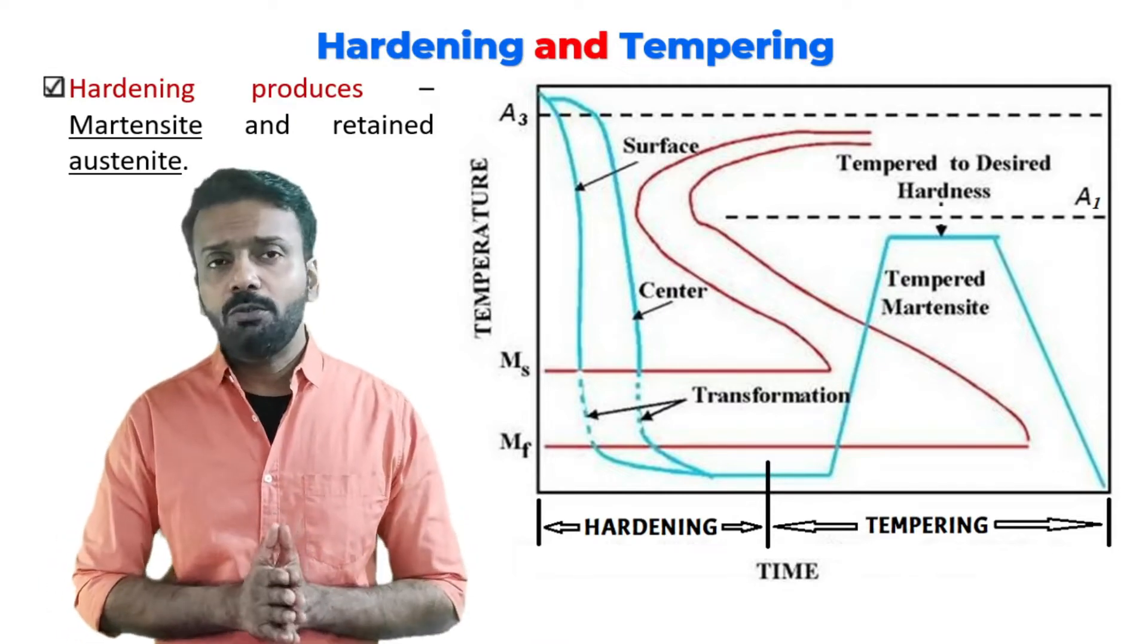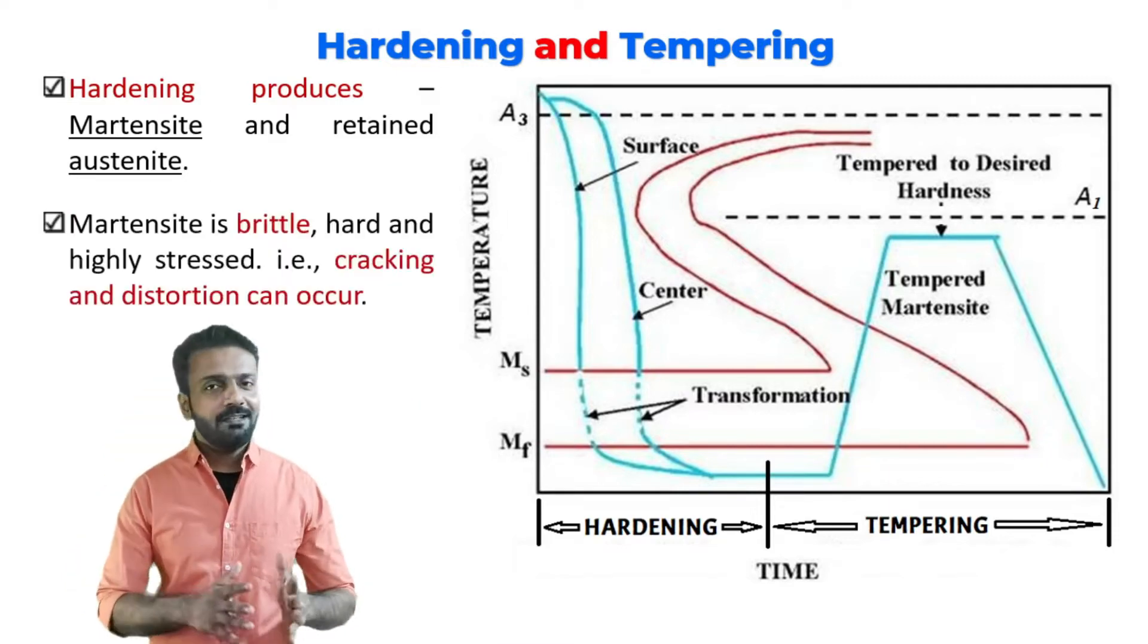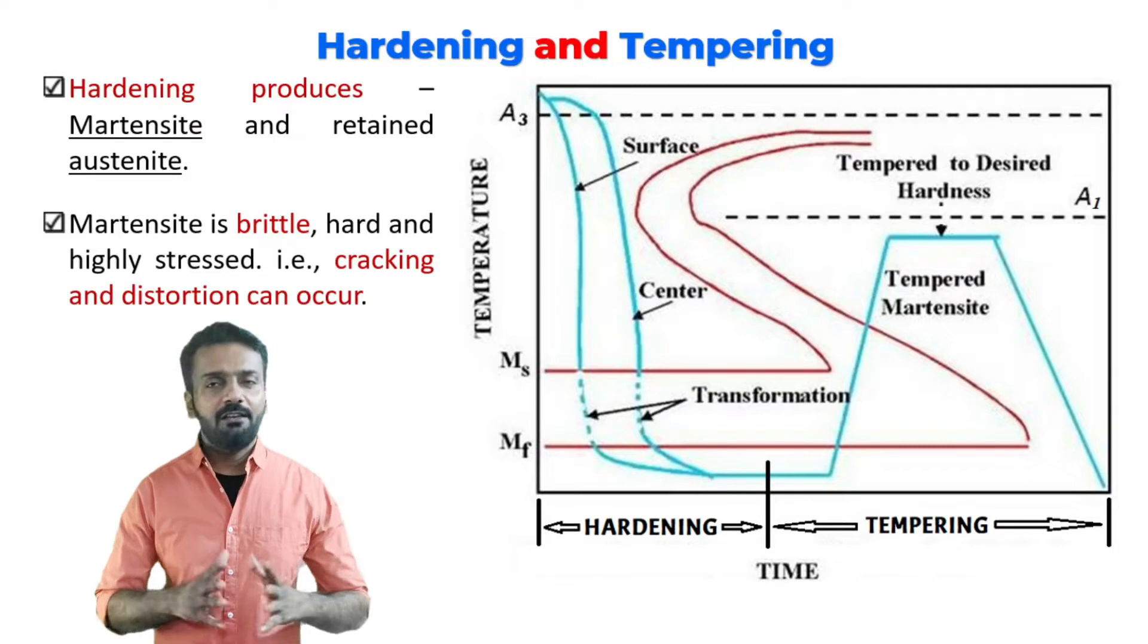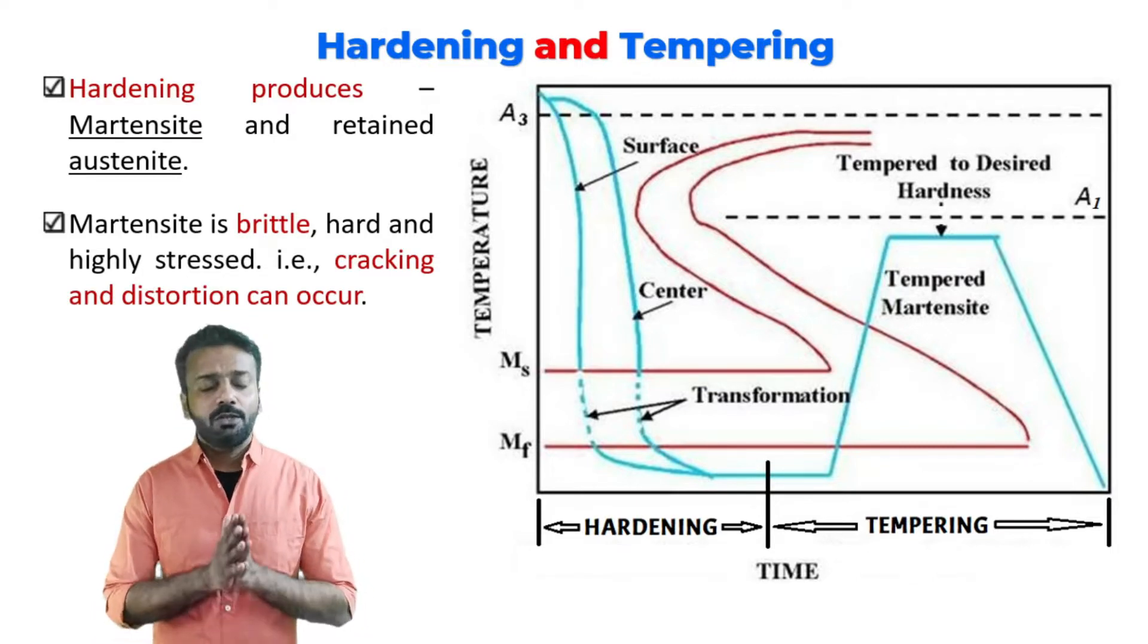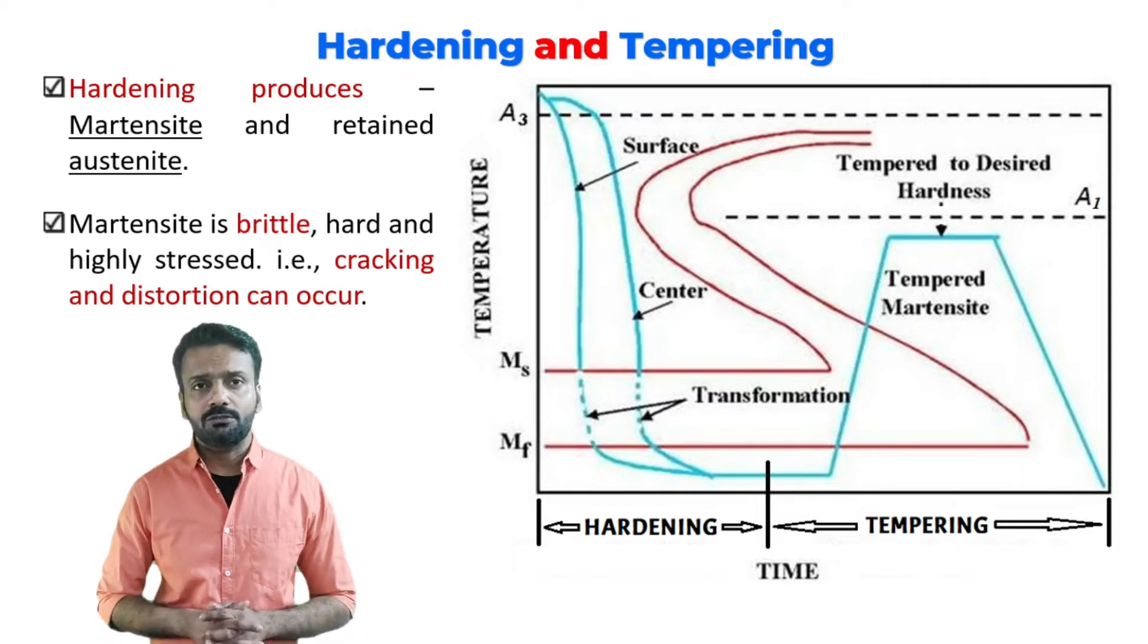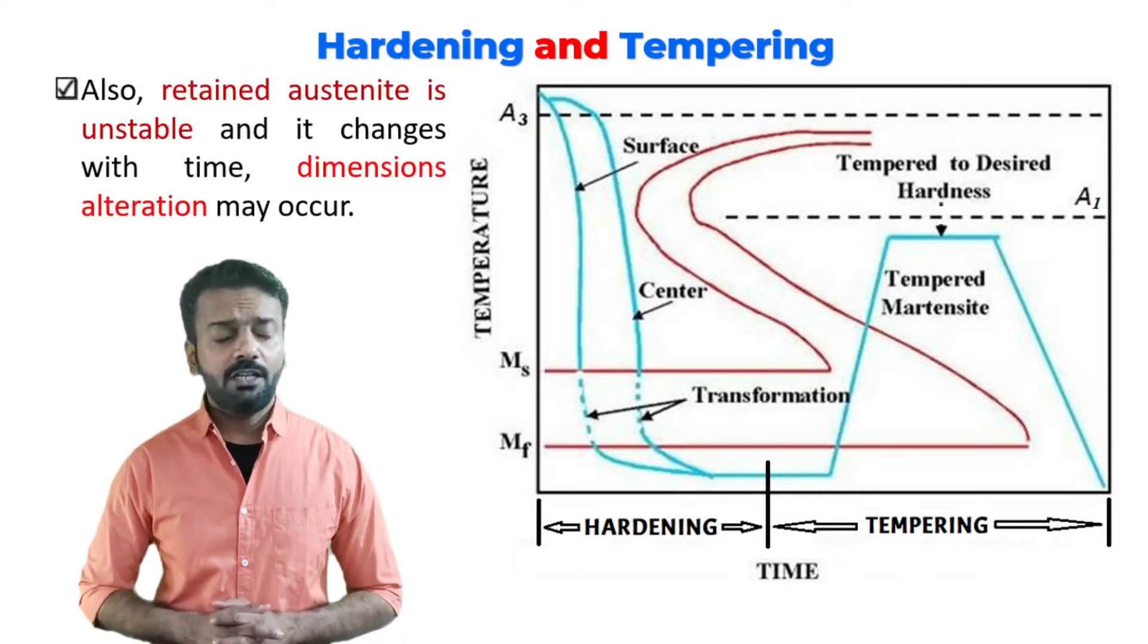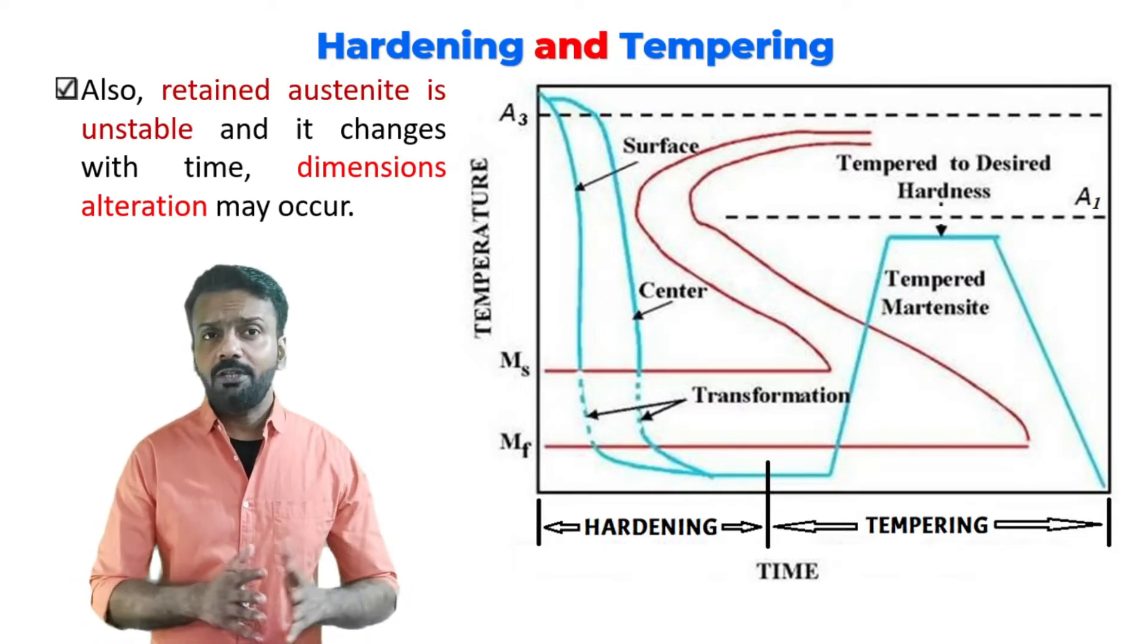Hardening produces martensite and some retained austenite. Martensite is very brittle and can fail even with the smallest crack - it is highly prone to crack and distortion. In addition, retained austenite is highly unstable, which can cause dimensional changes in the material.